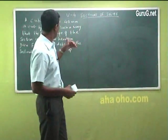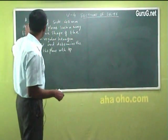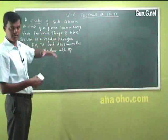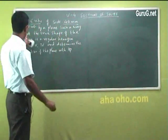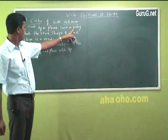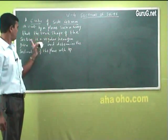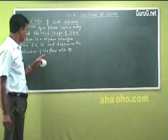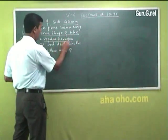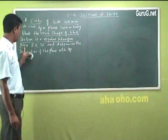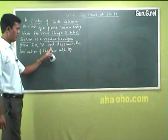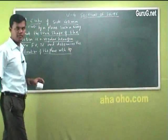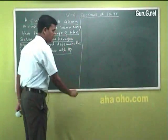Now I'll go for an example — one problem. It says a cube of side 40 mm is cut by a plane such that the true shape of the section is a regular hexagon. Draw the front view, top view, and determine the inclination of the plane with HP. This is how the question reads.